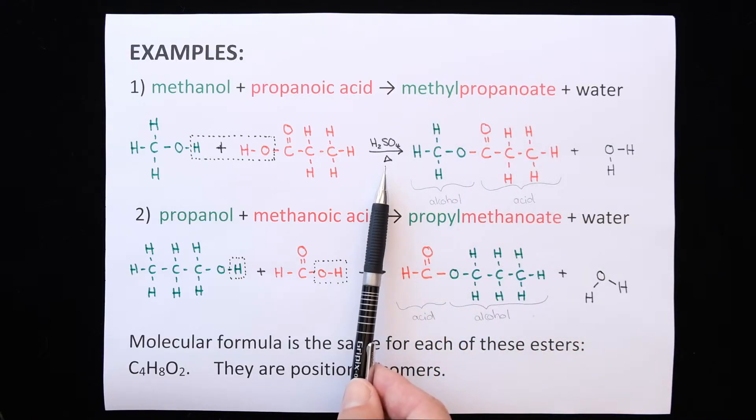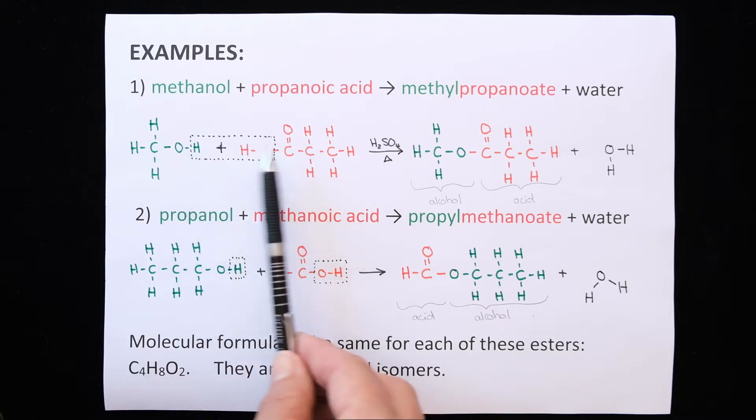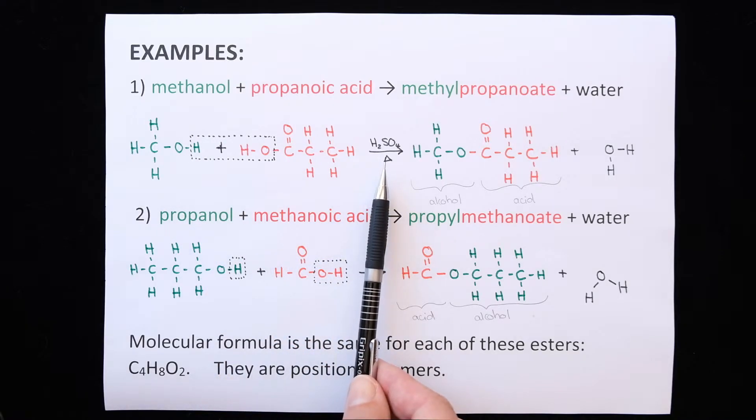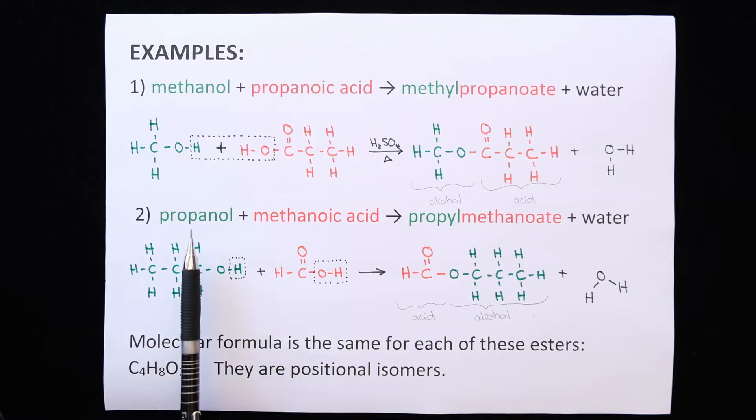The triangle represents heat. These two would be added in a test tube in a water bath. And they are heated in a water bath for safety reasons because the alcohols are flammable. And the H2SO4 is your catalyst.